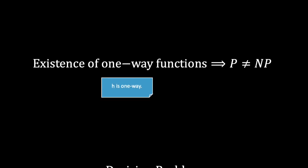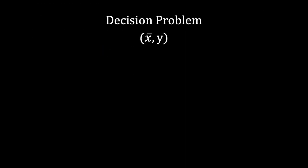We can define a decision problem that outputs true if an input exists that starts with a given prefix and hashes to a given value, in this case 42.